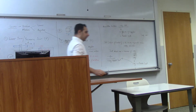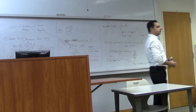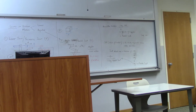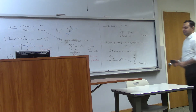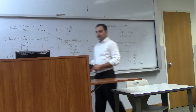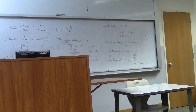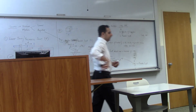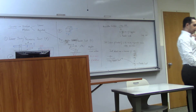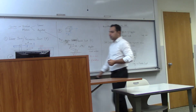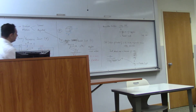Any guess on how many degrees of freedom a human body has? Around three hundred — you have so many joints in your spine, your knees, your shoulders. Some of these joints have more than two or three degrees of freedom.